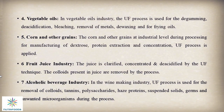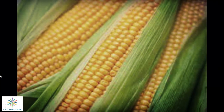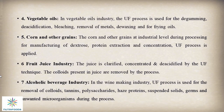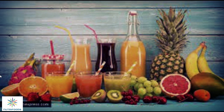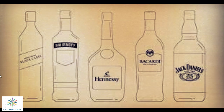In vegetable oil industries, the ultrafiltration process is used for degumming, deacidification, bleaching, removal of metals, de-waxing, and for frying oils. In corn processing, corn and other grains at the industrial level are processed for manufacturing of textiles, protein extraction, and concentration where the ultrafiltration process is applied.